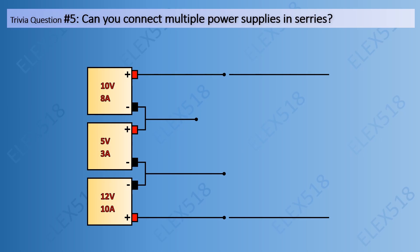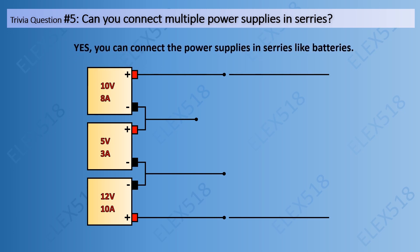Trivia question number five: Can you connect multiple power supplies in series? Yes, you can connect power supplies in series like batteries. In this figure, three power supplies are connected in series, but one power supply — 12 volts, 10 amperes — is connected in reverse. From one tap you can get 10 volts at 8 amperes, and from another you can get 5 volts at 3 amperes. The total output is 15 volts at 3 amperes — you must always follow the lowest power supply current rating.